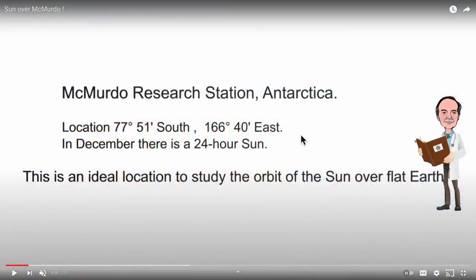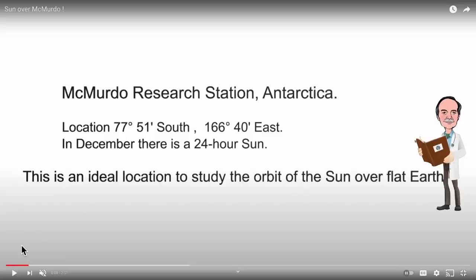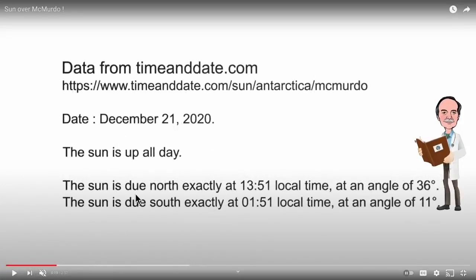So here we have McMurdo Station in Antarctica. Now here is the actual location of McMurdo Station, 77, almost 78 degrees south and 166 degrees east. And in December there's a 24 hour sun. Now here's the data from the sun. It's due north at exactly 1:51 p.m. and here is the angle, 36 degrees. And at 01:51 local time, it's at an angle of 11 degrees and it is due south. And this is December 21st, 2020.